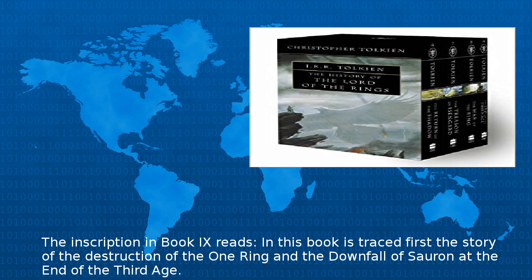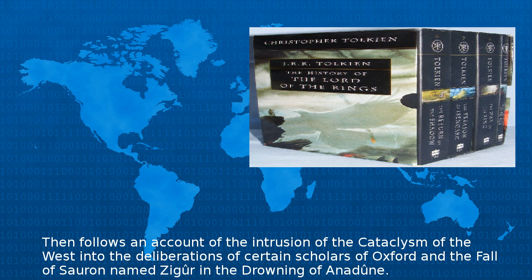The inscription in Book IX reads: In this book is traced first the story of the destruction of the One Ring and the downfall of Sauron at the end of the Third Age. Then follows an account of the intrusion of the Cataclysm of the West into the deliberations of certain scholars of Oxford, and the fall of Sauron named Zigûr in the Drowning of Númenor.